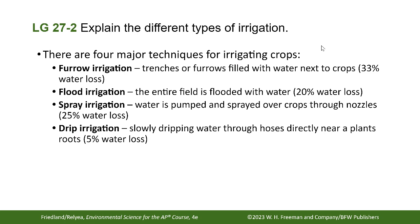There are four major types of irrigation. The first is furrow irrigation, where trenches or furrows are filled with water next to the crops. It's not super efficient — it has a 33% water loss, meaning not all the water put in the furrows reaches the crops; some just evaporates. Flood irrigation floods the entire field with water and is slightly more efficient, with only a 20% water loss.